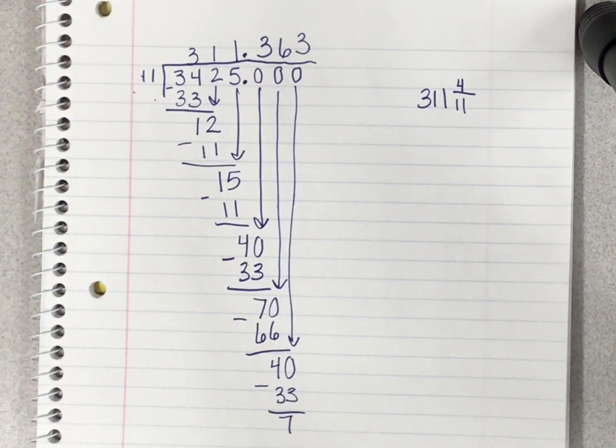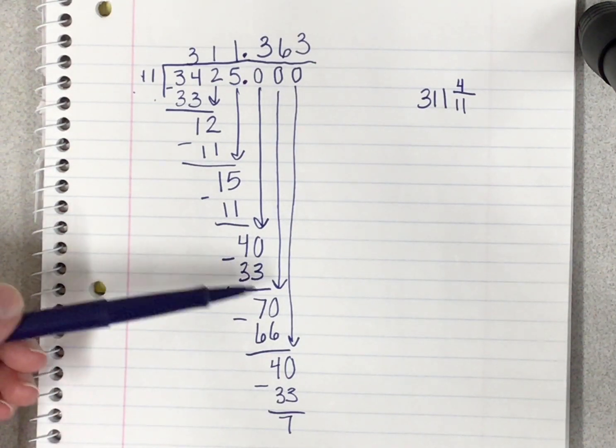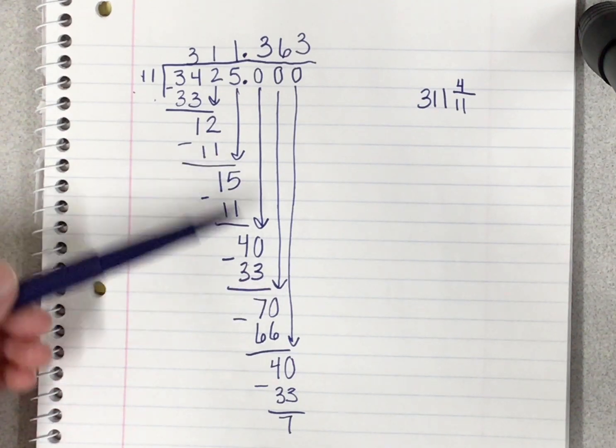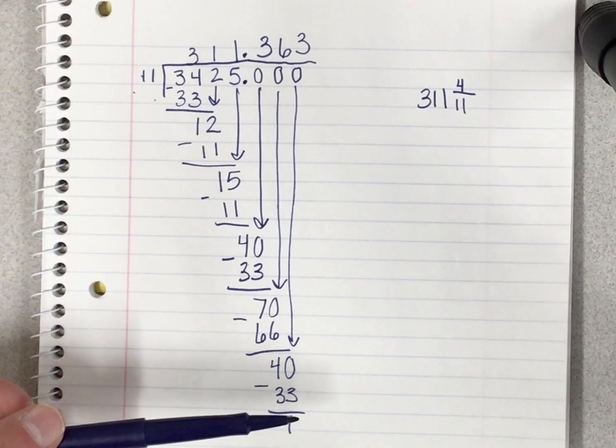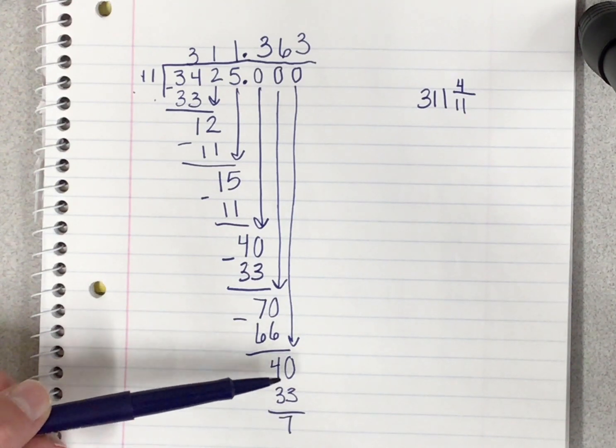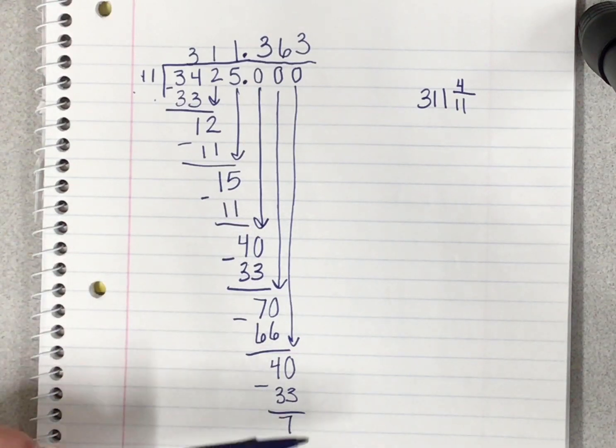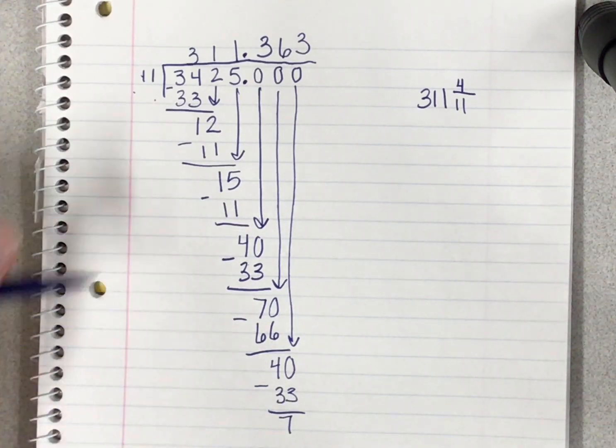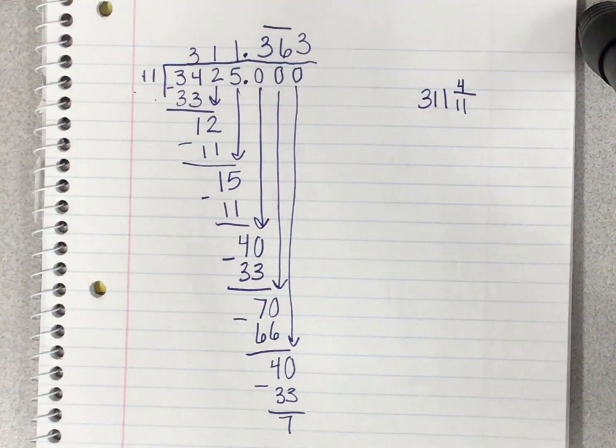At this point, you may notice that there was a pattern that was starting to form. When I said that 11 went into 40 three times, my remainder there was 7, and when I added a zero, I had 70. If I were to continue this problem, I'm noticing I got the 40 with the 33 and the 7 again. So if I were to keep going, that 11 would go into 76 times. So the piece that's going to repeat here is the 3 and the 6.